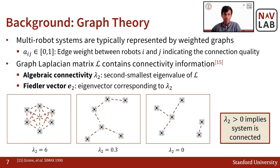Here you can see how the algebraic connectivity varies for different graph configurations. For a fully connected graph, the value is the highest — which is the number of nodes, in this case 6. As the graph gets more disconnected, the value decreases, remaining greater than 0 as long as the graph is connected and going to 0 for a disconnected system.